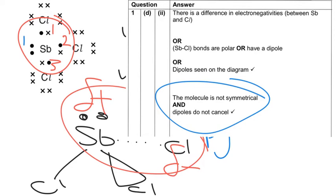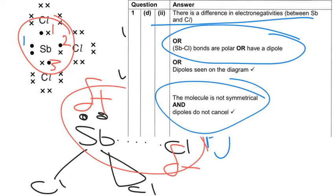What I've just brought up there is the actual mark scheme for this particular section of the question. And what you can see is you do need to point out about the symmetry of the molecule and how the dipoles do not cancel. Because it is an explain question, it does actually say explain this. And you'll also notice here that we've said that the molecules have a dipole. That's the same thing as saying that there's a difference in electronegativities. And what you'll notice as well is that there is a reference to a diagram. So if you do draw a diagram as part of your answer, of course that can get you the marks.